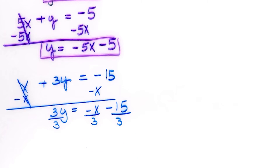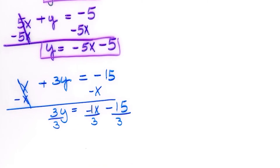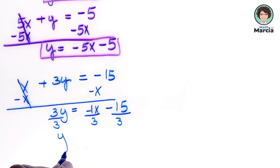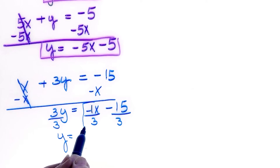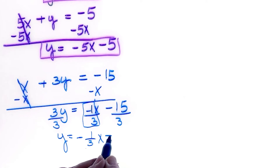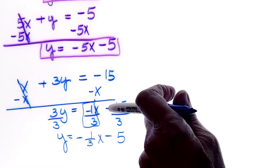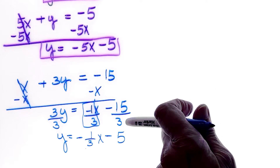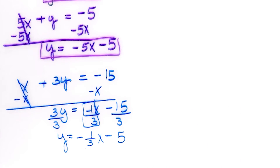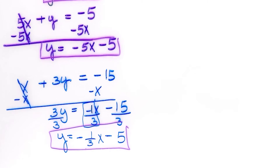A variable without a number in front always has an understood 1 there. So y equals negative one-third x minus 5. The reason it's minus 5 is that dividing negative 15 by 3 gives negative 5. The equation in slope-intercept form is y equals negative one-third x minus 5.